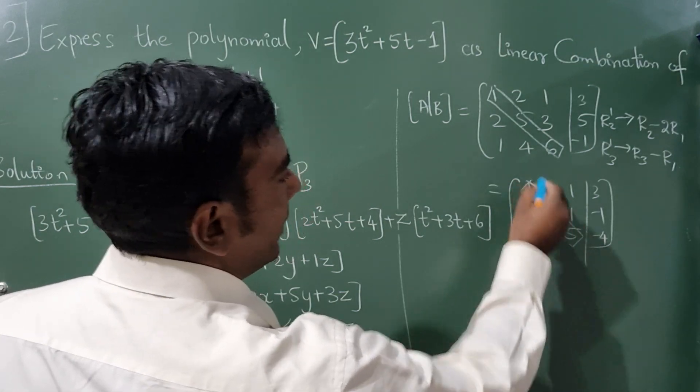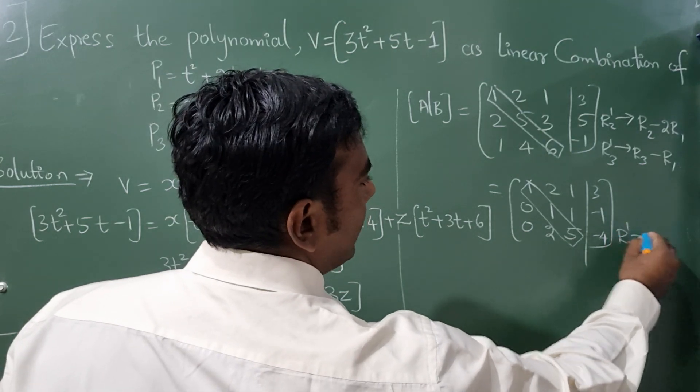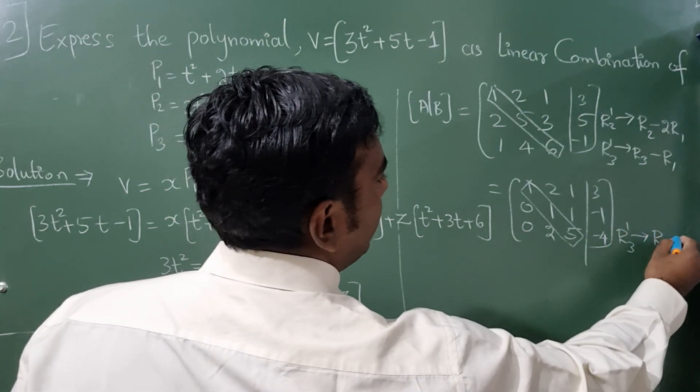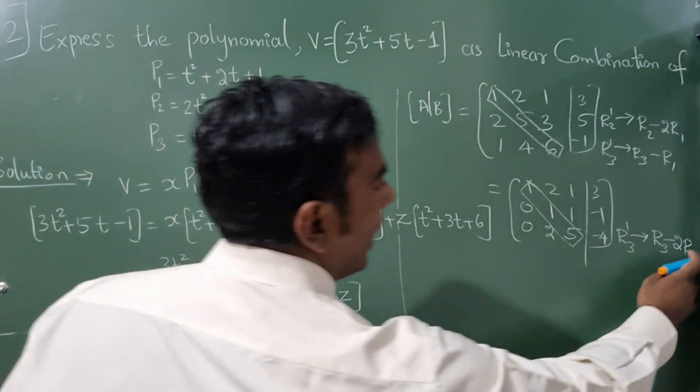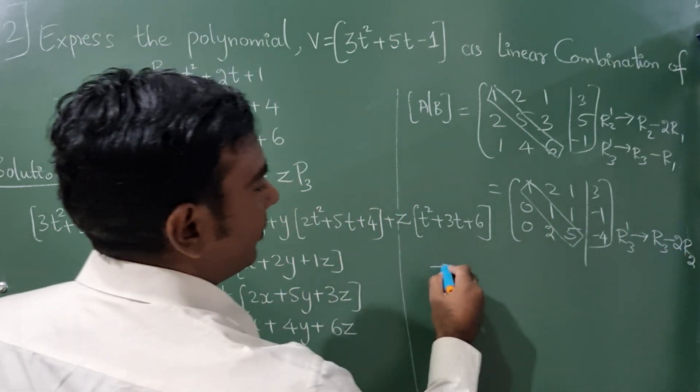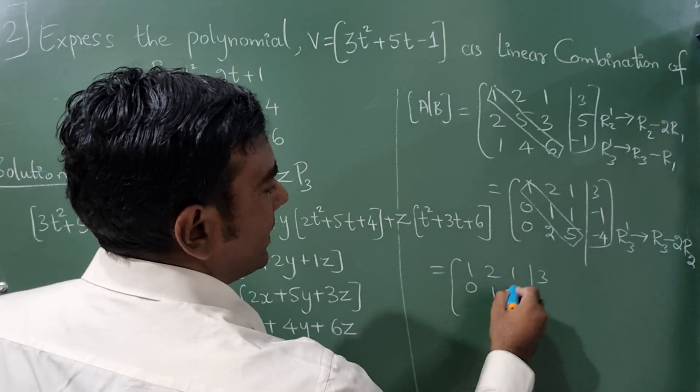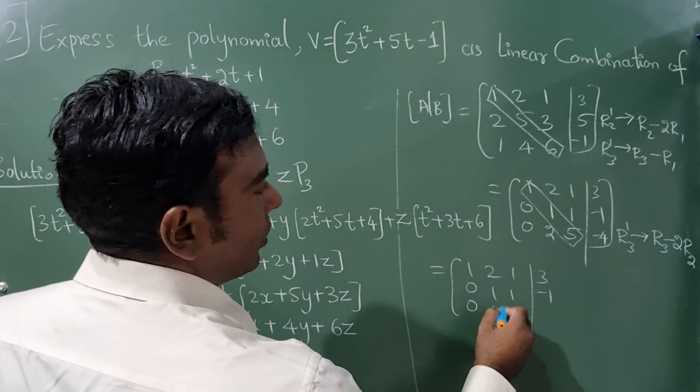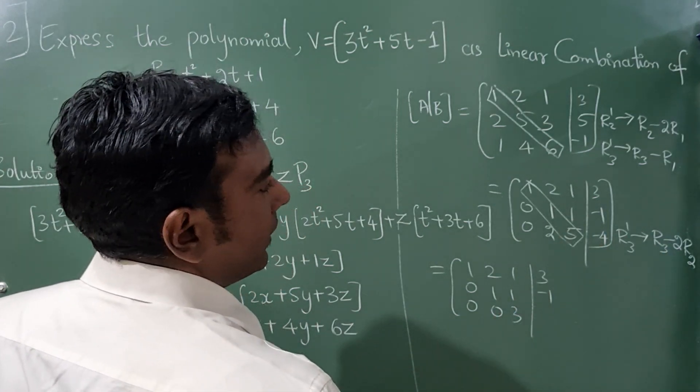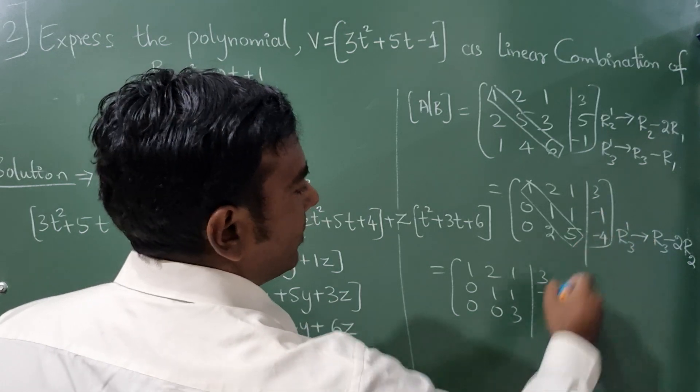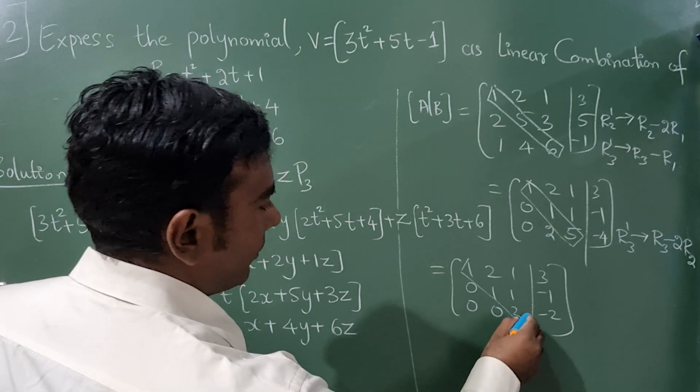This is your again diagonal element. You have to make this element 0. So R3 will become R3 minus 2·R2, sorry, row 2. 1, 2, 1 and this is 3. Write this row as it is. 0, 0, 5 minus 2 will become 3, and minus 1, minus into minus is plus, so this will become minus 2.